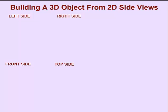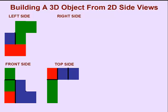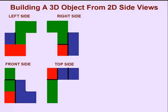We'll give you the front side, top side, left side, and right side views. Remember, those dark lines mean that there is a depth discrepancy.